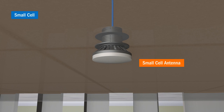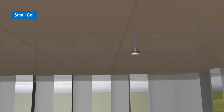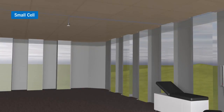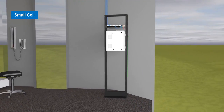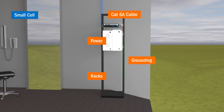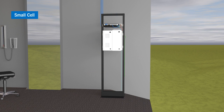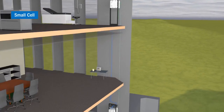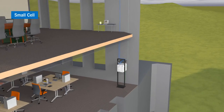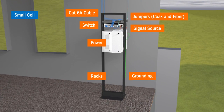What is small cell? A small cell solution is a series of connected small antennas, similar to Wi-Fi, that transmit a carrier-specific cellular signal within a building. Small cell systems can be deployed for a single carrier, while DAS solutions can be deployed for up to four carriers within a building, offering more choice for building occupants.